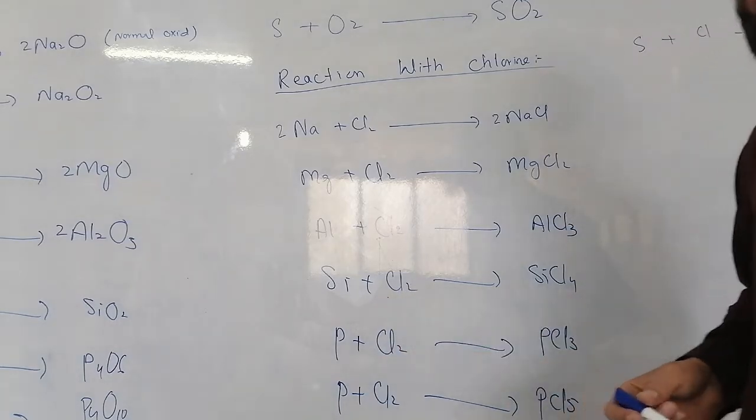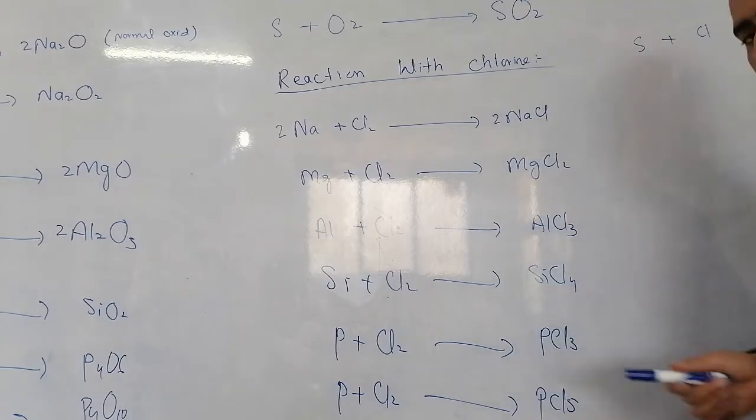Silicon with chlorine to react gives silicon tetrachloride.